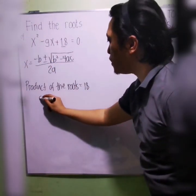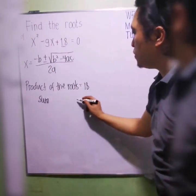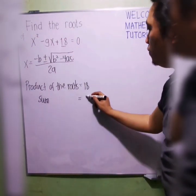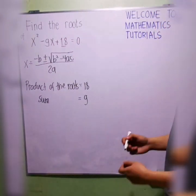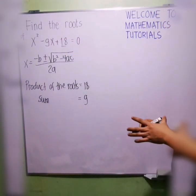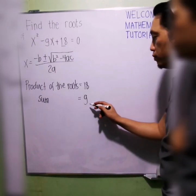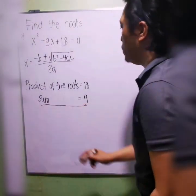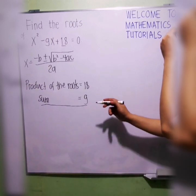We have the sum of the roots is, from the equation, we have 9. Now, we are going to focus first on the sum. We will look at the sum. Sum is 9.